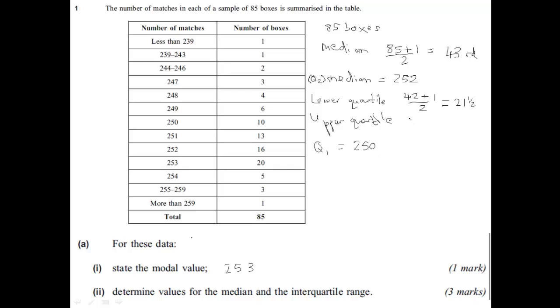And then for the upper quartile, we do the same thing. But this time, it will go from the 44th to the 85th, won't it? So if we look at the midpoint of that, 64 and a half is going to occur. 4, 7, 11, 17, 27, 40, 56, 76. So 253. So Q3 equals 253. The interquartile range equals 253, the upper quartile, minus 250, which equals 3.